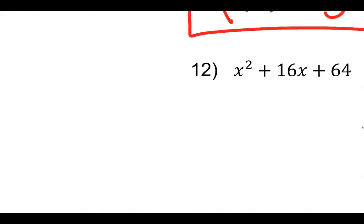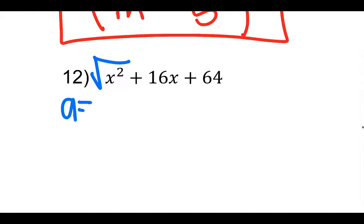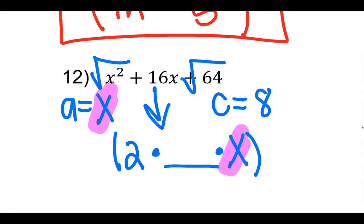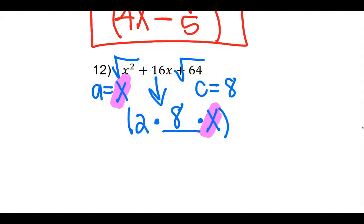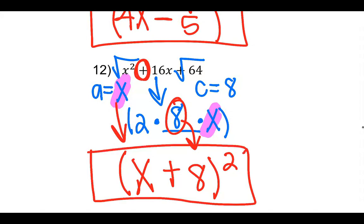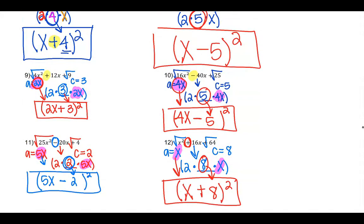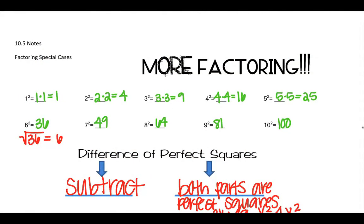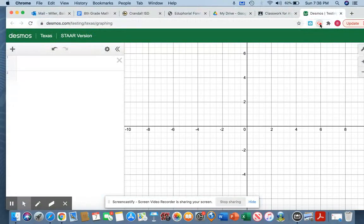Let's do the last one. Square root of x squared — a equals just x. C equals square root of 64, which is 8. Then 2 times 8 gives me 16. It's a plus here, so it's going to be a plus here. So it's x plus 8 squared. And that's the difference of squares. You can always still do your x puzzles if needed, but this is kind of a shortcut. X puzzles always work for any type of factoring if you ever need to do it that way, but this is the shortcut. Hope y'all learned something — have an amazing day, bye!